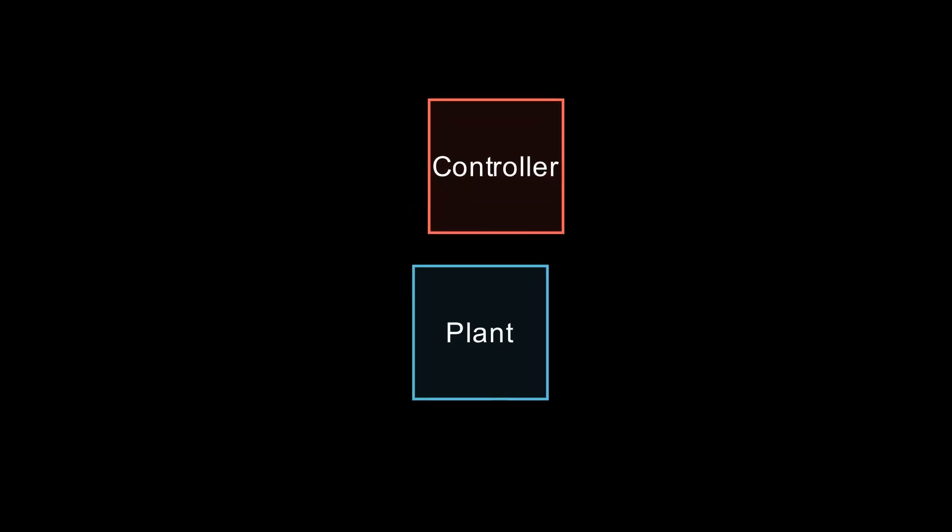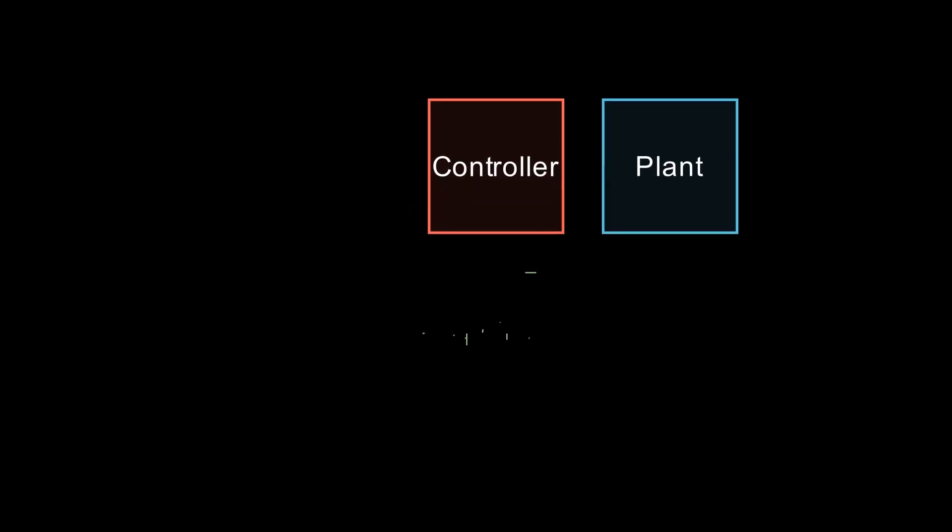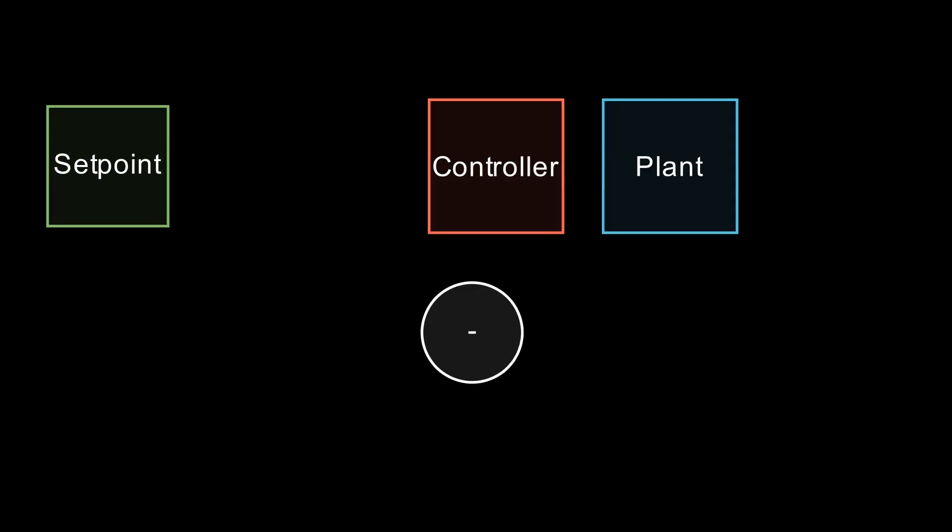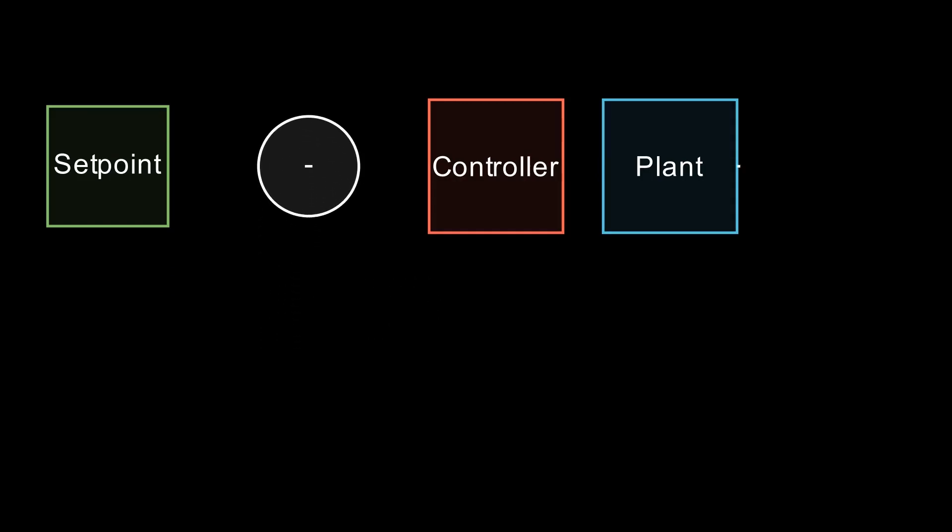To visually understand the idea of a feedback controller, of which a PID controller is one type, it can be good to visualize it as a block diagram of the data flowing. First, we generate the reference signal, which is the target state of our system. Then we subtract the measured state from the desired state. This calculation is our error.